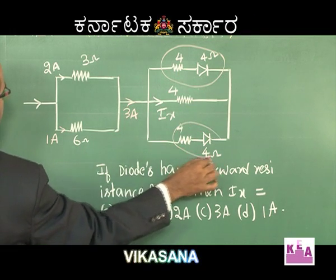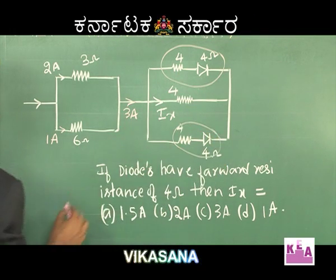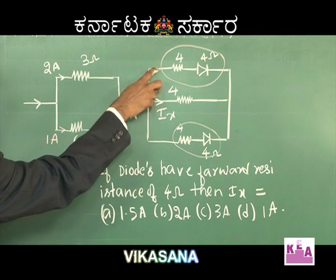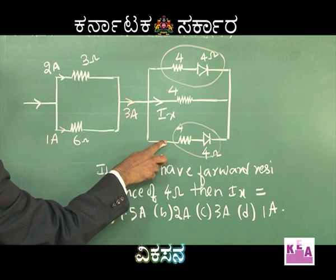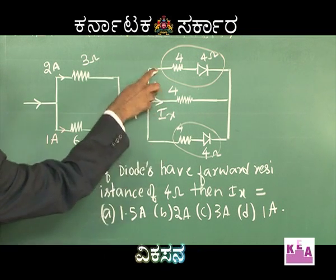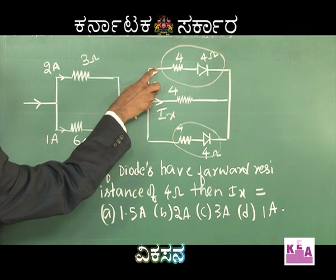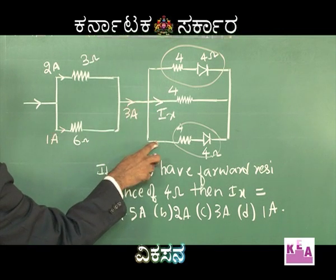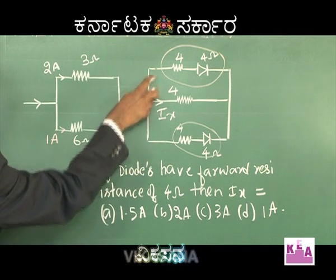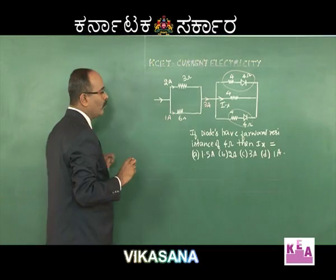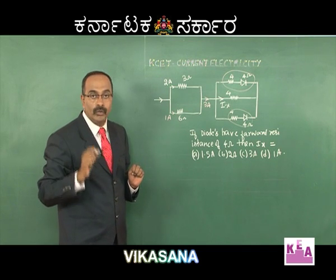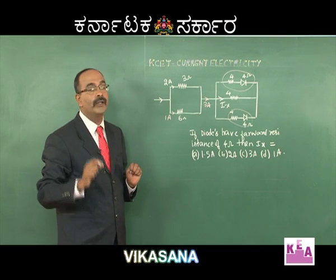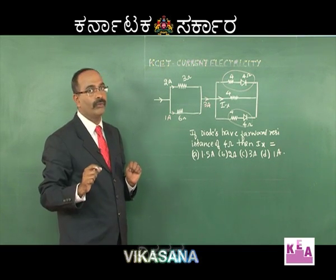Similarly, this 4 ohm is connected in series with 4 ohm, giving 8 ohm. So this branch is 8 ohm and the other branch is also 8 ohm. What is 8 ohm parallel 8 ohm? 8 ohm parallel 8 ohm gives us 4 ohm.